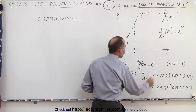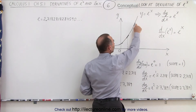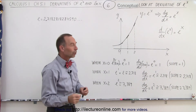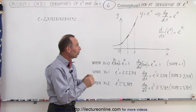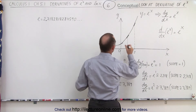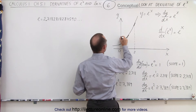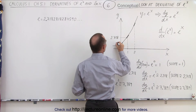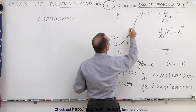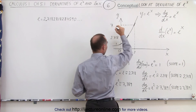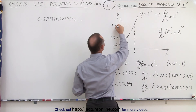And then when we let x equal 2, the slope is going to be 7.389. In other words, the slope is equal to the value of the function at that point. The value at x equals 1 is 2.718, the value at x equals 0 is 1, and the value at x equals 2 is 7.389.